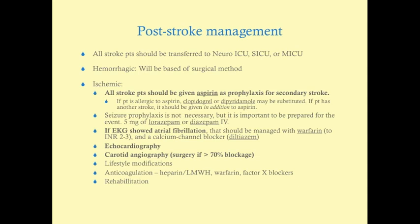Lifestyle modifications are appropriate — changes in diet, increased activity, and so forth. Anticoagulation can be useful not just in patients with atrial fibrillation but in other stroke patients as well. Options include heparin, low molecular weight heparin, warfarin, or the newer Factor Xa inhibitors like apixaban (Eliquis) and dabigatran (Pradaxa). Unlike heparin and warfarin, these newer agents can be taken at home without monthly INR monitoring. Many stroke patients have residual neurologic deficits that can be improved with appropriate physical rehabilitation.